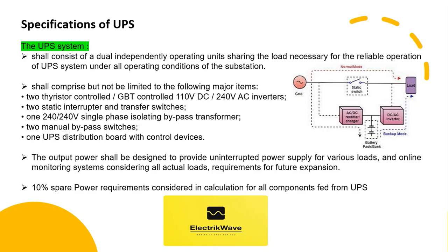The UPS system shall consist of dual independently operating units sharing the load necessary for reliable operation under all operating conditions of the substation. UPS shall comprise, but not be limited to: two thyristor-controlled or IGBT-controlled 110V DC to 240V AC inverters, and two static interrupter and transfer switches.